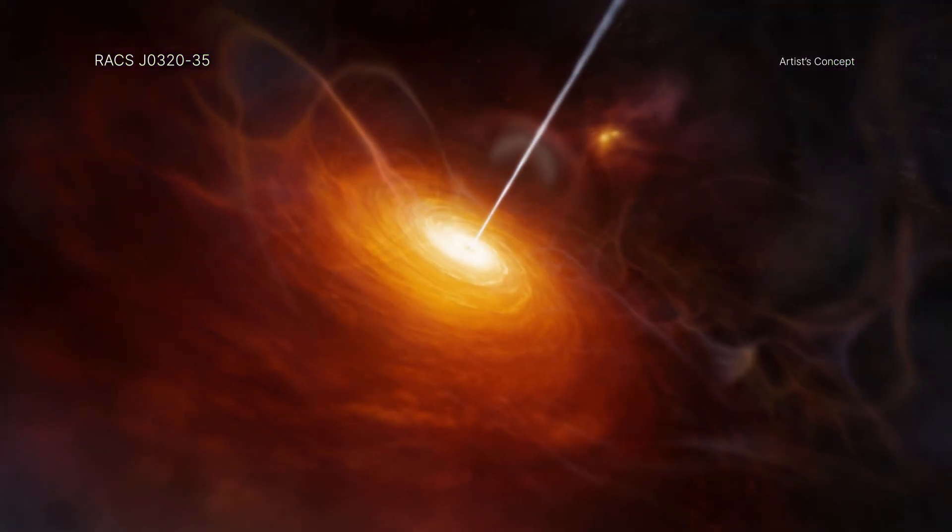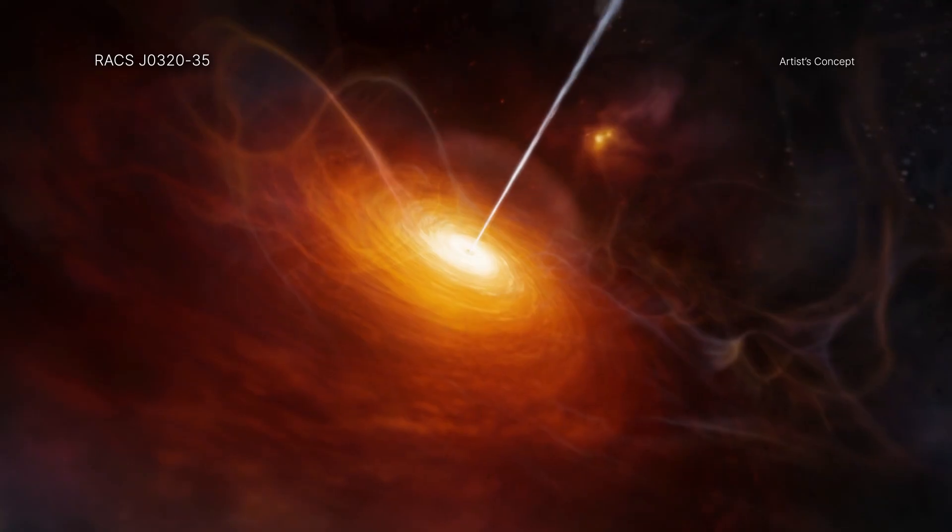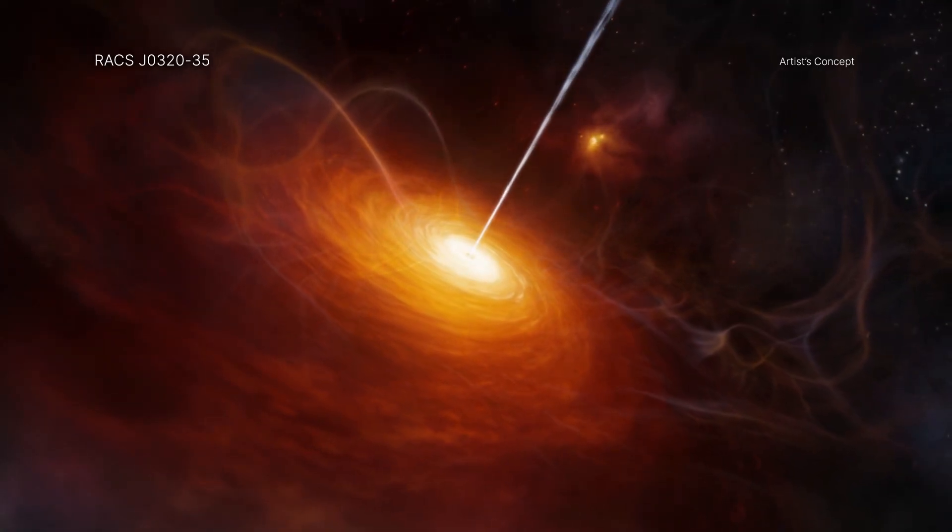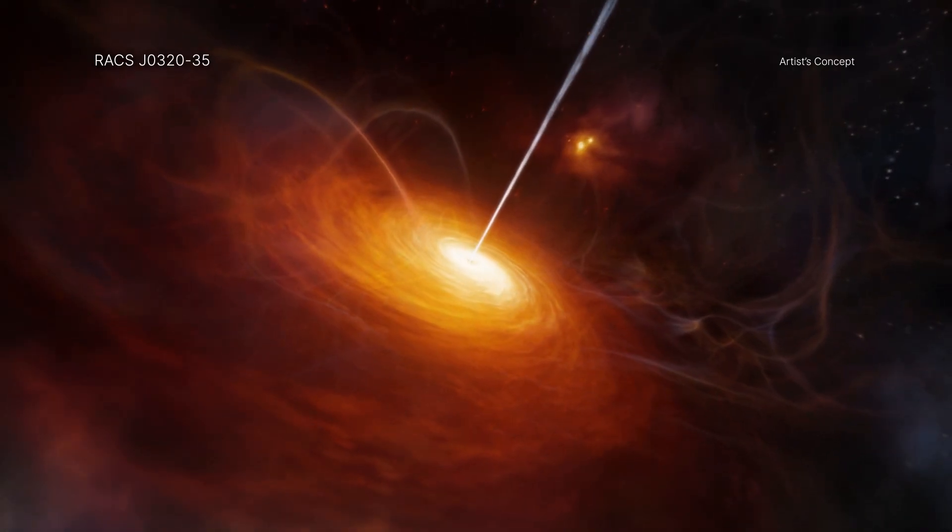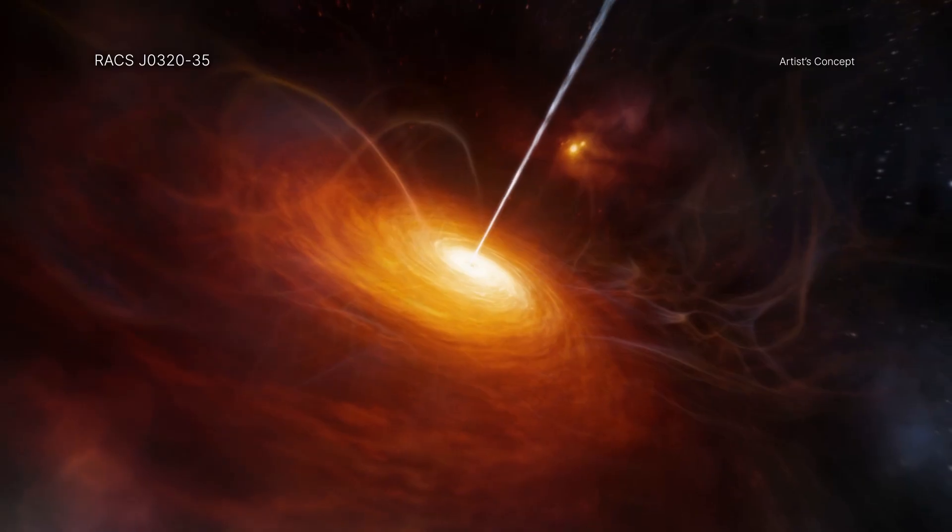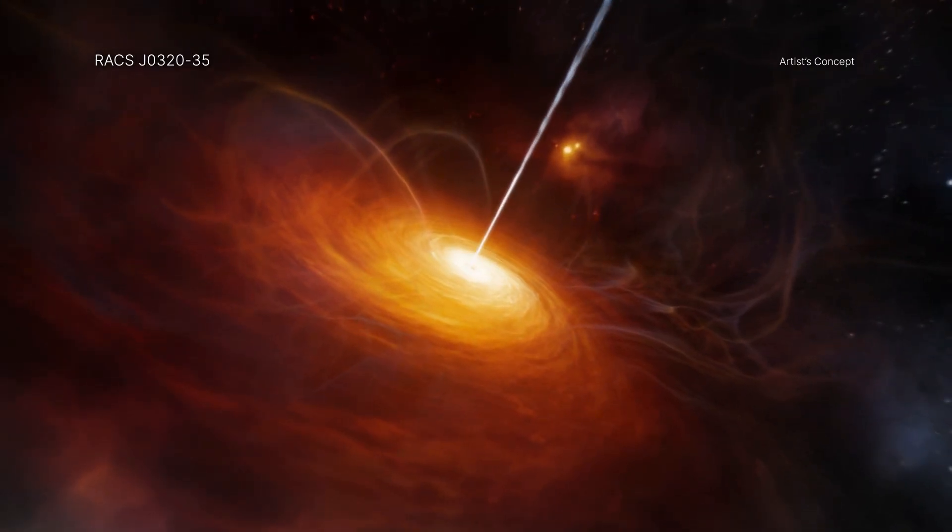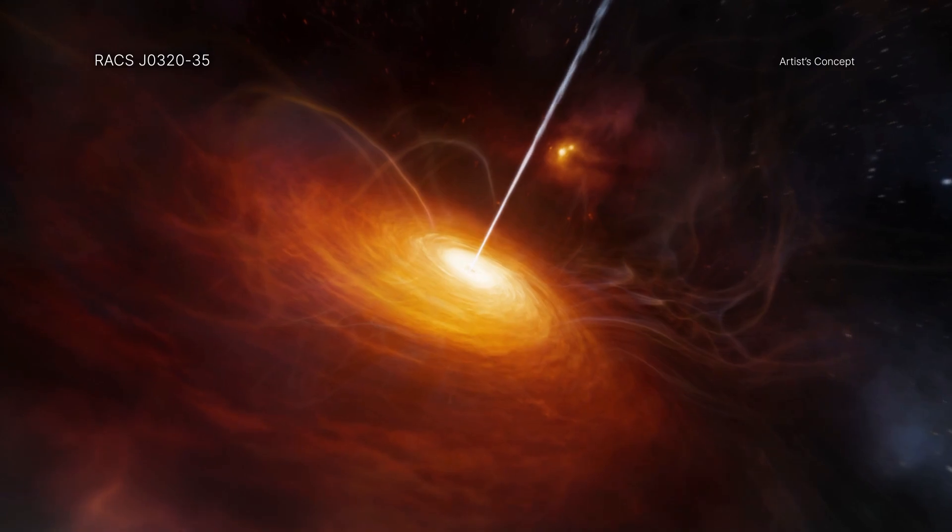When matter is pulled toward a black hole, it is heated and produces X-rays and optical light. This radiation creates pressure by pushing out on the matter, which counteracts the force of gravity pulling the matter inward. When the amount of matter becomes large enough, the pressure from the radiation overpowers the force of gravity.